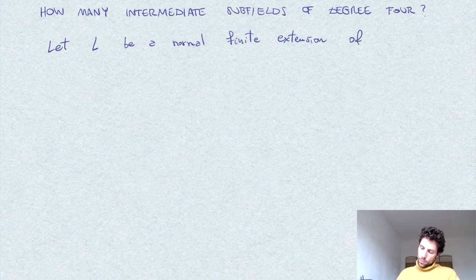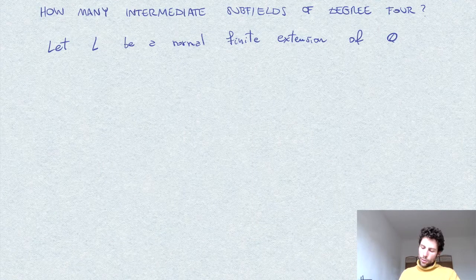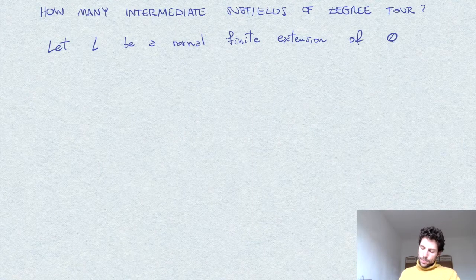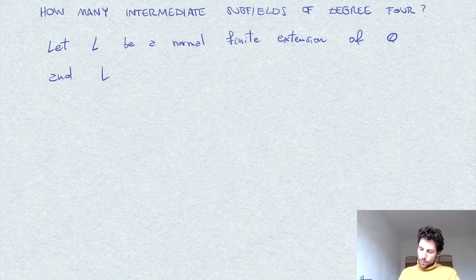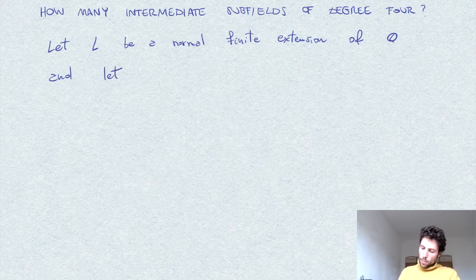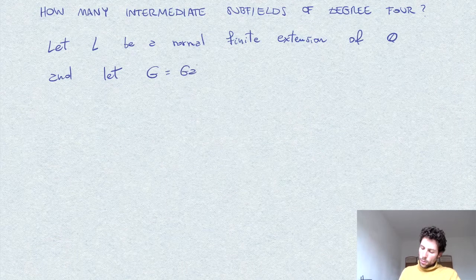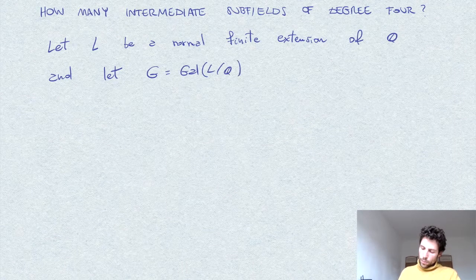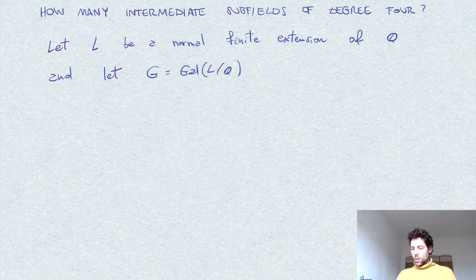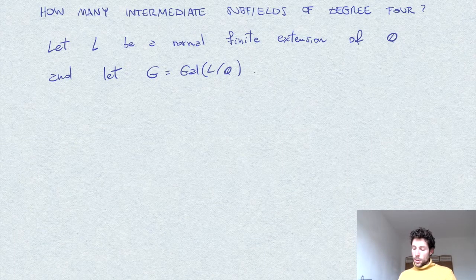Over Q, so we work in characteristic zero. Let me denote by G the Galois group.